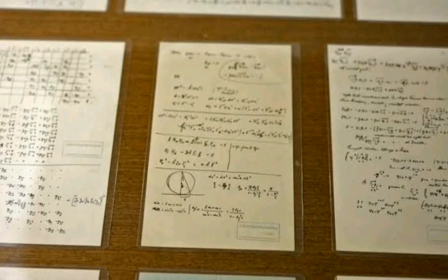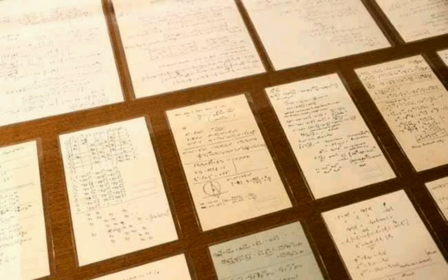Einstein, who developed the theory of relativity, a pillar of modern science, tried unsuccessfully for decades to prove another concept: that electromagnetism and gravity were different manifestations of a single fundamental field.